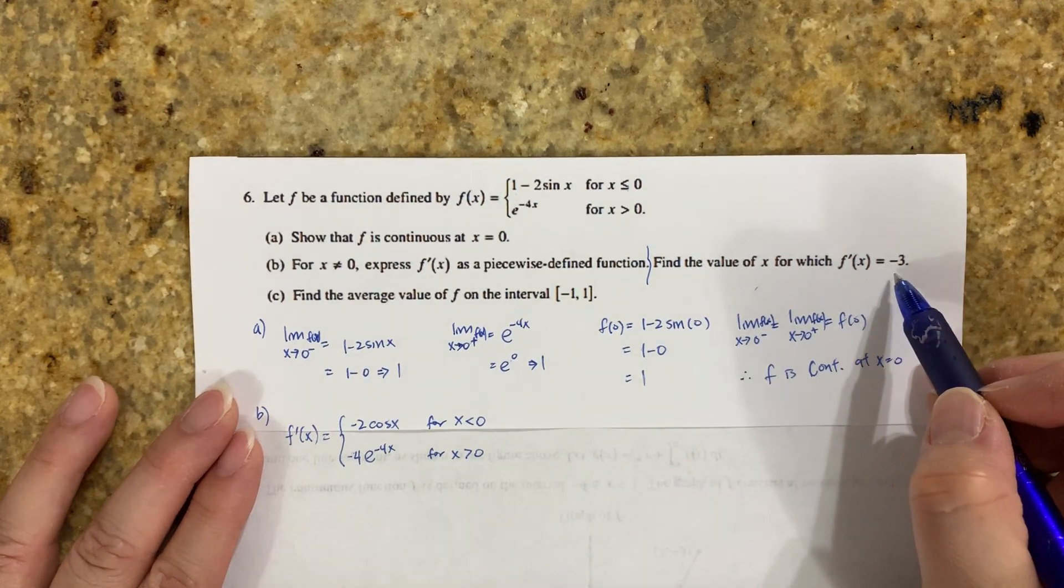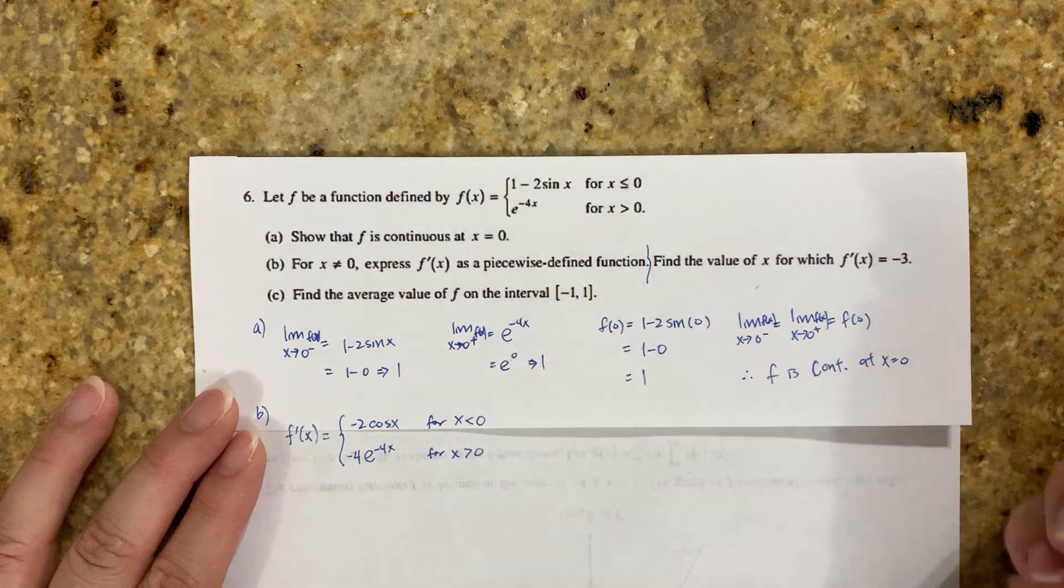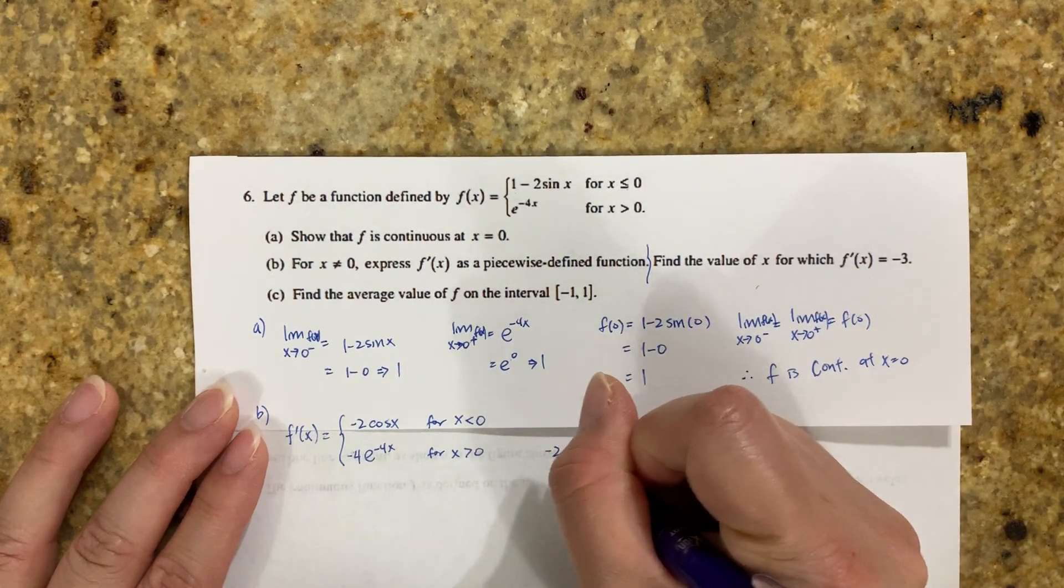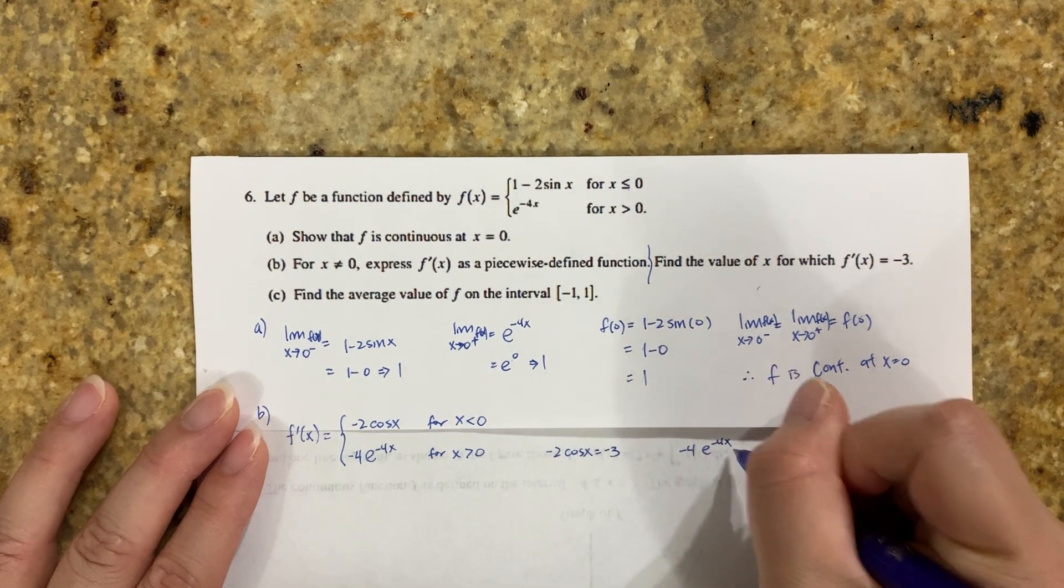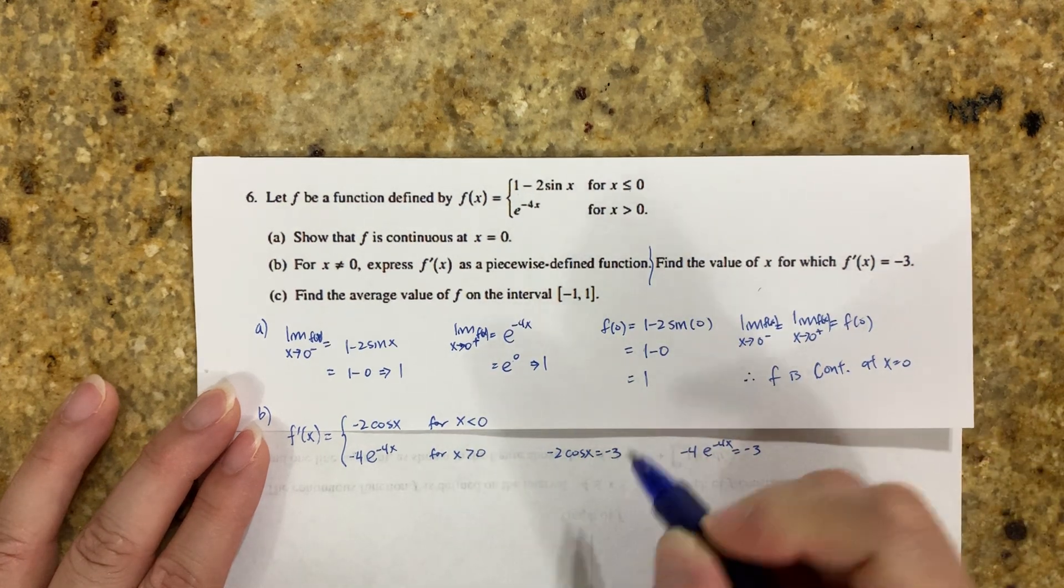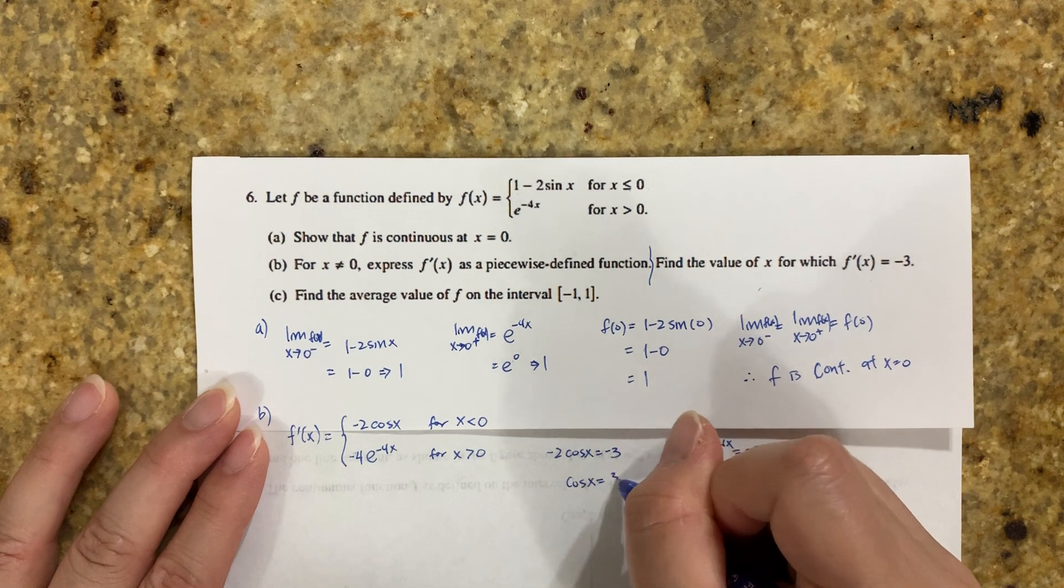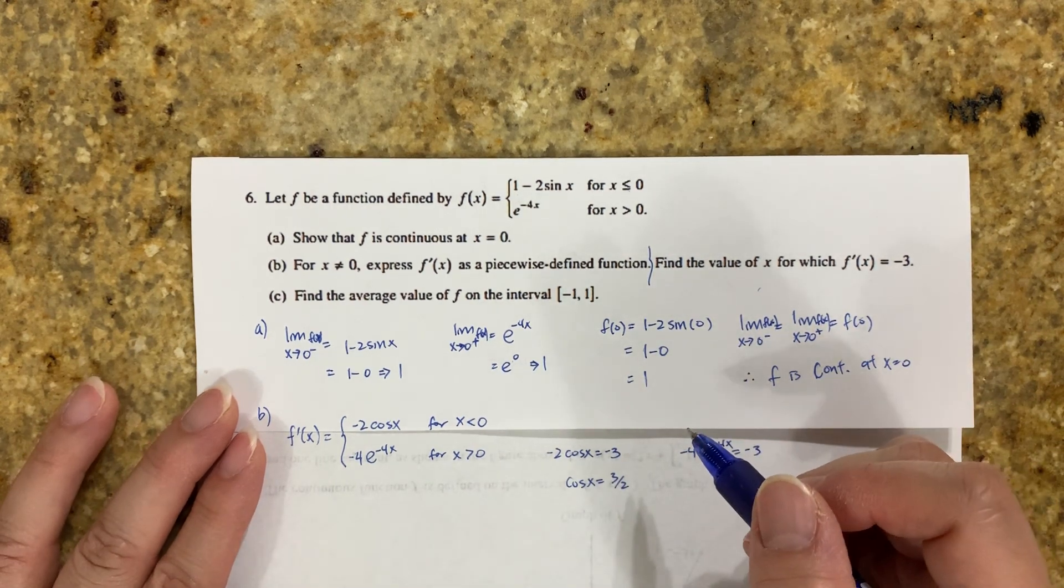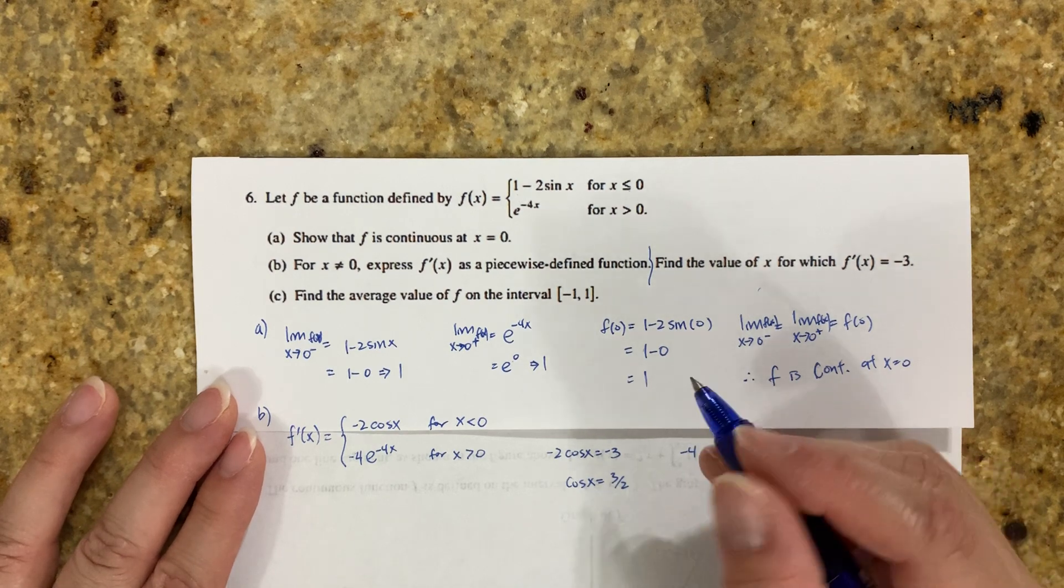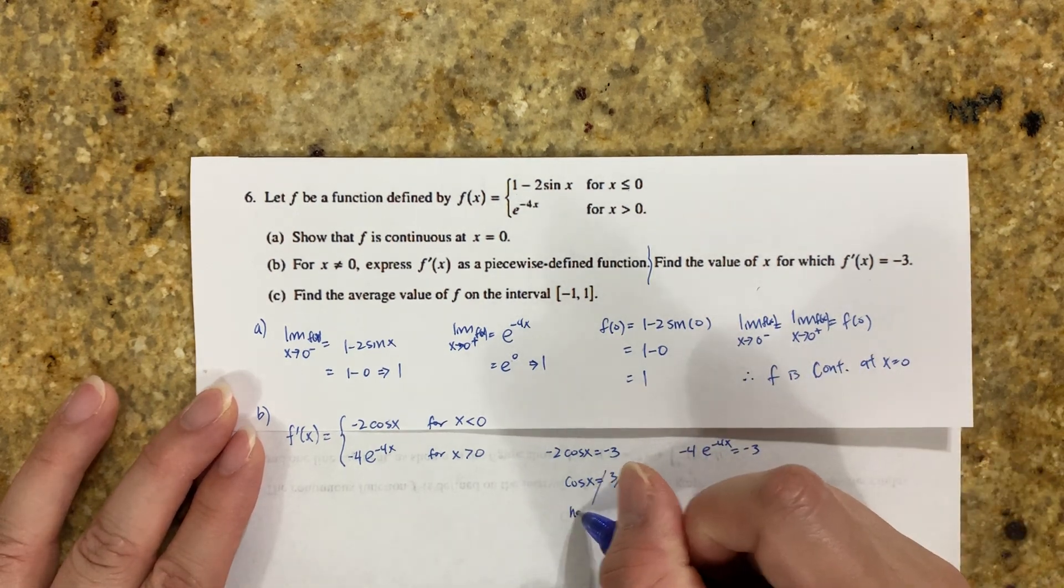When does f' = -3? Set each piece equal to -3. So -2cos(x) = -3, or -4e^(-4x) = -3. Dividing, cos(x) = 3/2. But cosine cannot be 3/2 because cosine is between -1 and 1, so no solution here.